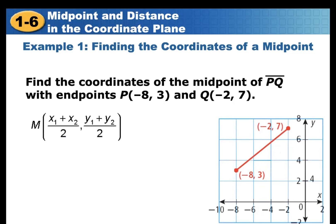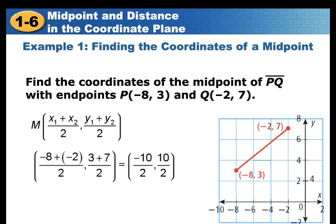Using the formula (X₁ + X₂)/2 and (Y₁ + Y₂)/2, substitute: (-8 + (-2))/2 and (3 + 7)/2. That gives -10/2 and 10/2, which equals negative 5 and 5. You can also locate these points on the graph.